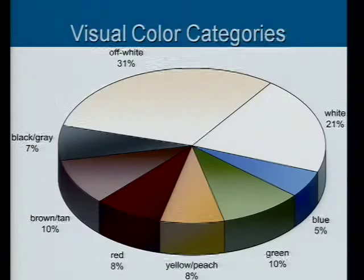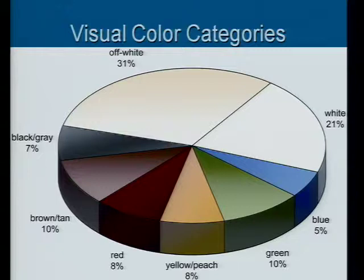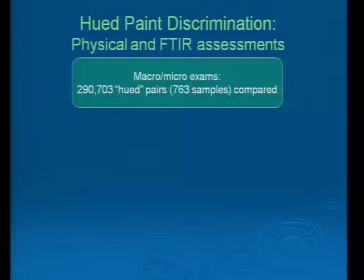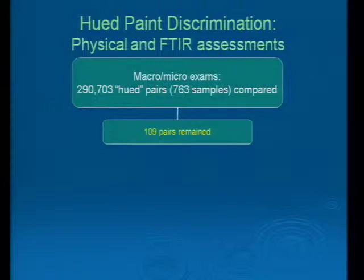Now we'll talk about the actual discrimination power we found within the hued group — 80% of the population. That consisted of 760 samples that were compared, over 290,000 inner comparisons. From that, 109 pairs remained. So from 290,000 pairs, just macroscopic and microscopic exams brought us down to 109 pairs left undifferentiated.